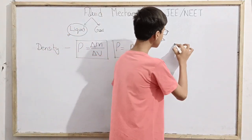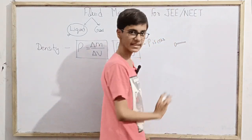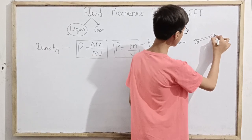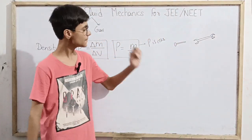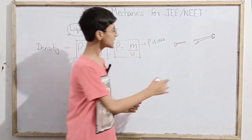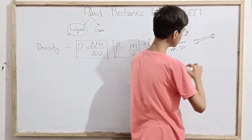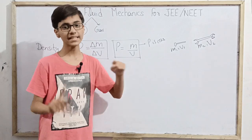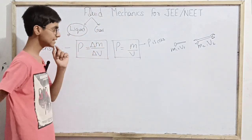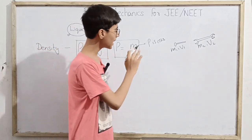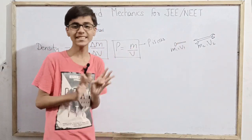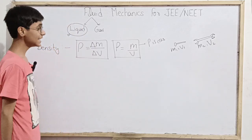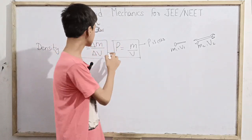For a homogeneous body — where density is constant — you simply take total mass divided by total volume. For example, take an iron nail and an iron wrench. Their masses are different (m1 and m2) and their volumes are different (v1 and v2), but since both are made of iron, one thing remains constant: their density. The density of the same material is always the same.